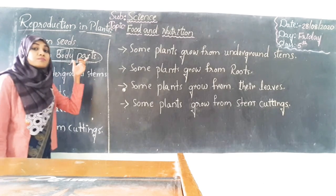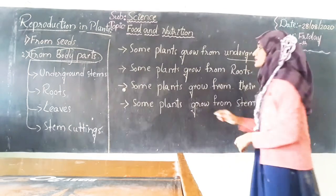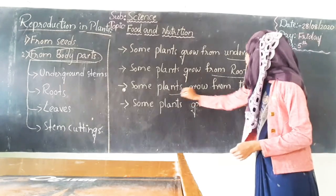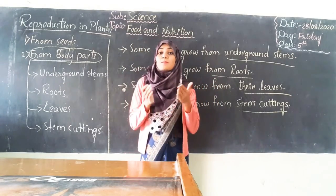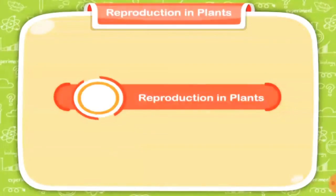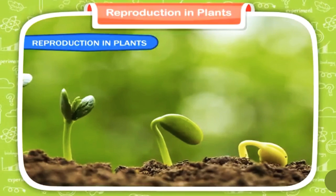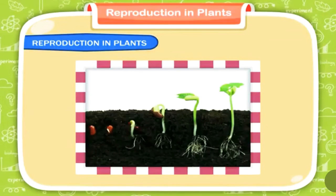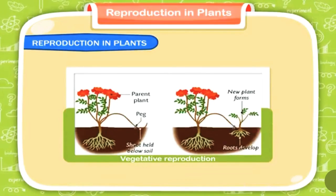The stems, roots, and leaves are all parts of a plant. Some plants grow from underground stems, some from roots, some through their leaves, and some from stem cuttings. Plants also reproduce to ensure the continuation of the species and they reproduce in many ways. Most plants grow from seeds, but there are some that reproduce from different parts like roots, stems, or leaves. The process by which different parts of a plant grow into a new plant is called vegetative reproduction.